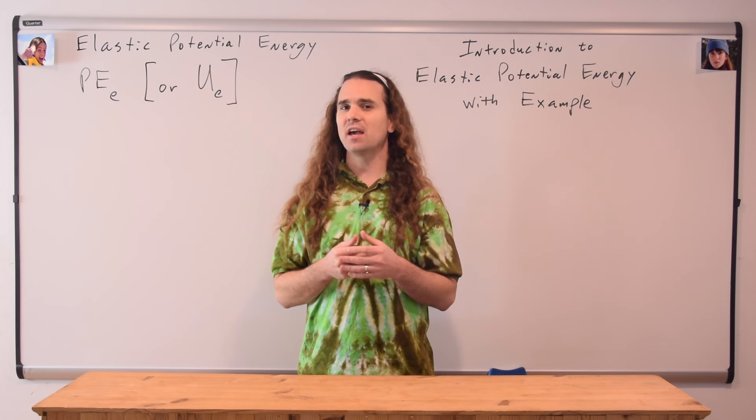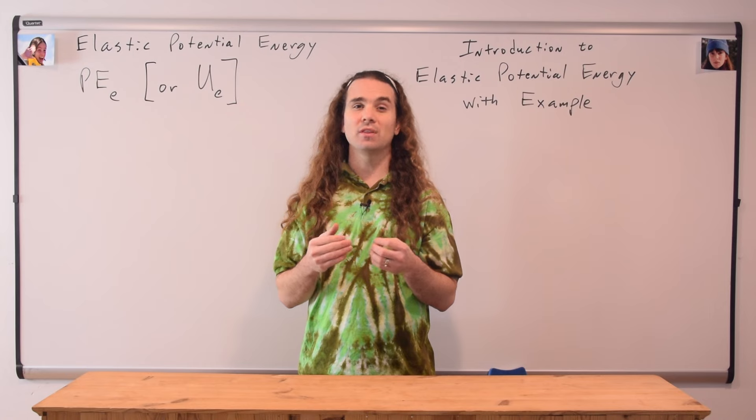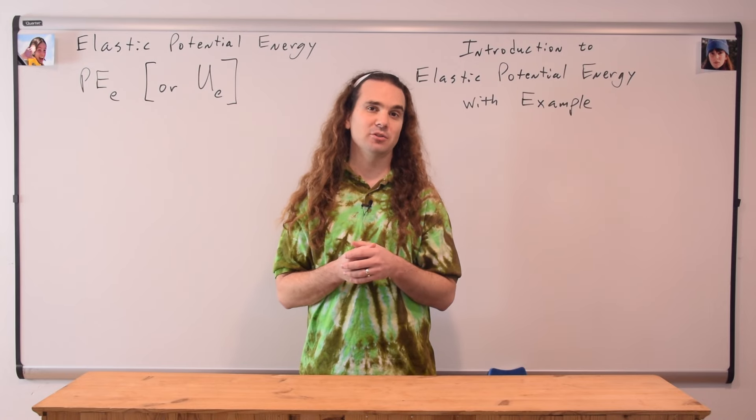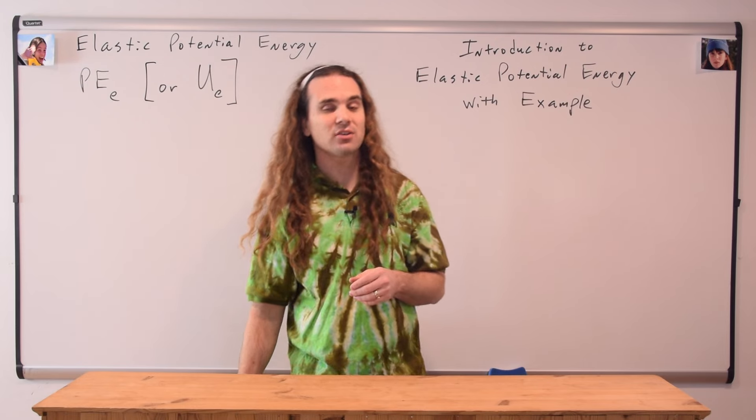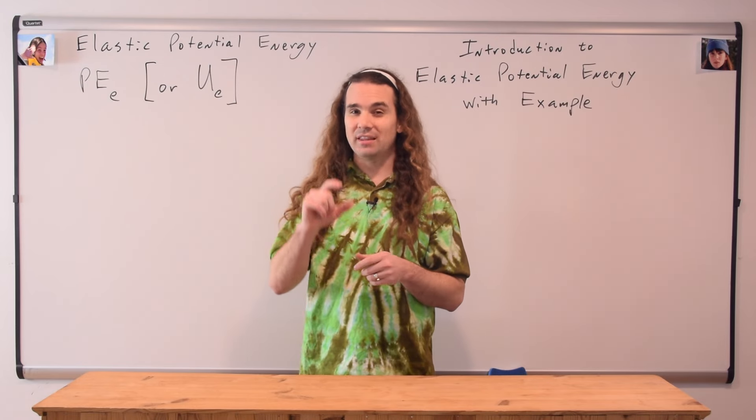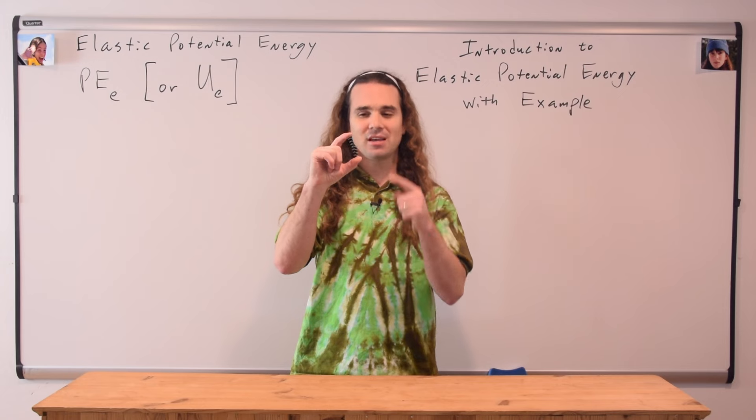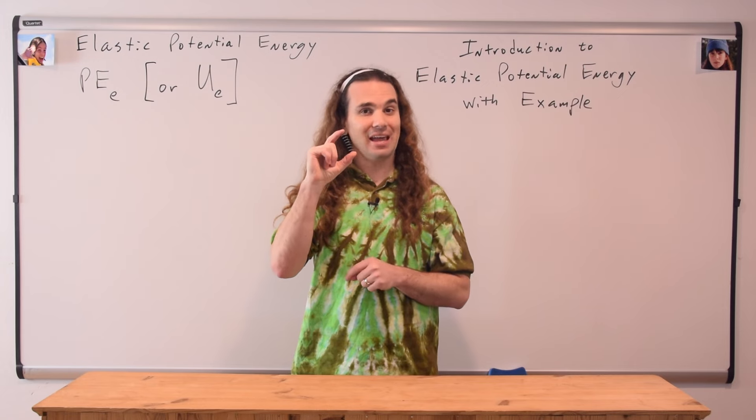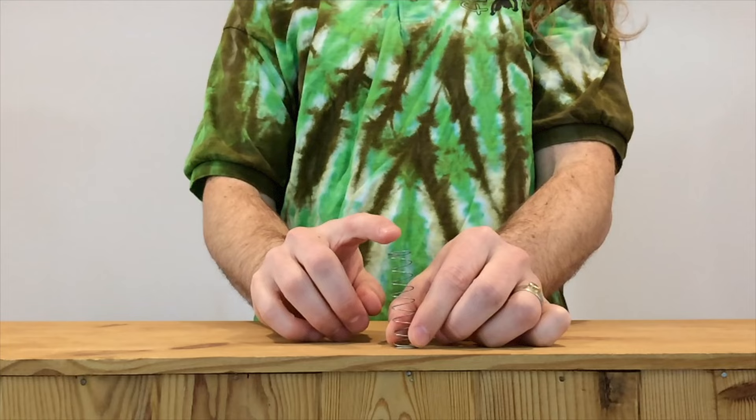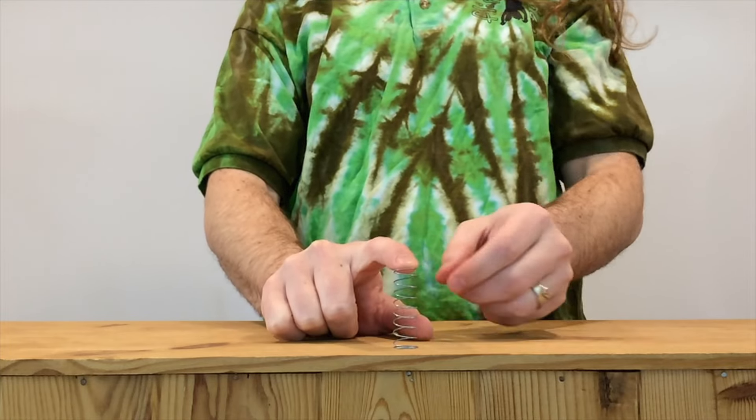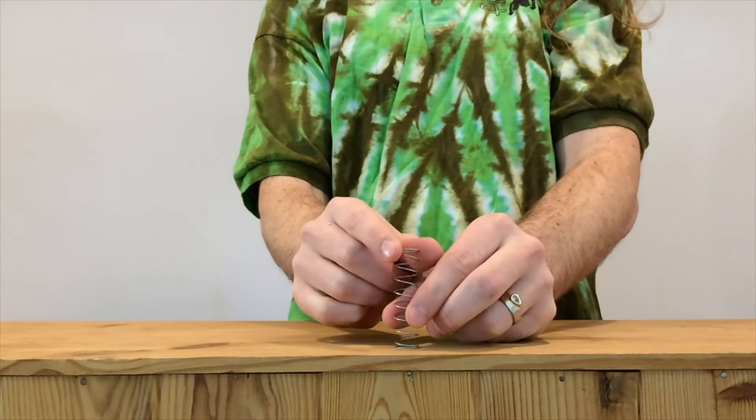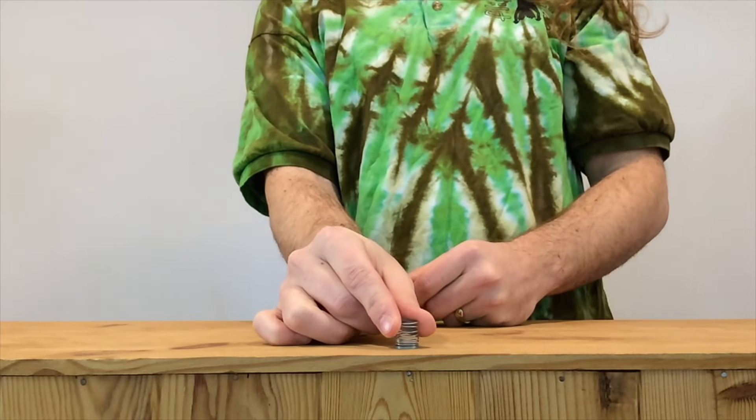Elastic potential energy is the energy stored in an object due to the temporary deformation of that object. There are all sorts of examples of elastic potential energy where we store energy in that object due to the temporary deformation of that object. And the most common example is a spring. If we compress the spring, if we make it smaller, elastic potential energy is stored in the spring and can be converted to kinetic and gravitational potential energy.